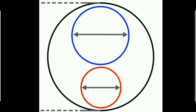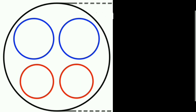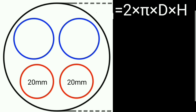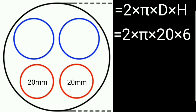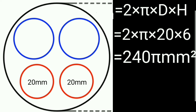Now let's calculate the outlet valves. For the four valve cylinder system, we use the same formula: 2 × π × d × h. With two outlet valves of 20 mm diameter and a lift of 6 mm, this gives 2 × π × 20 mm × 6 mm = 240π mm².